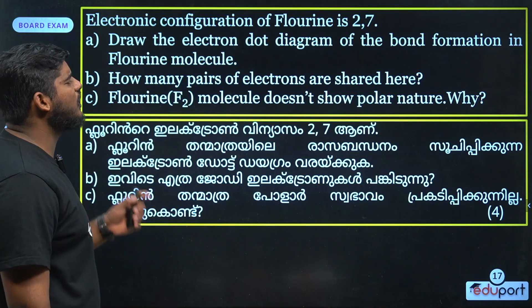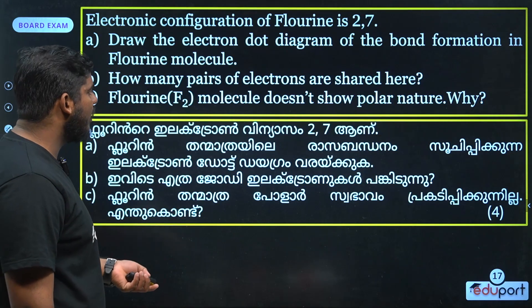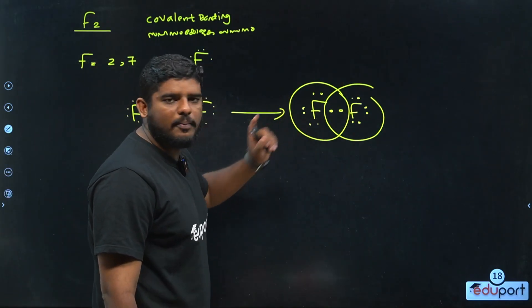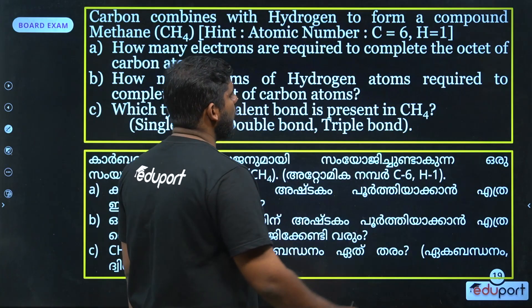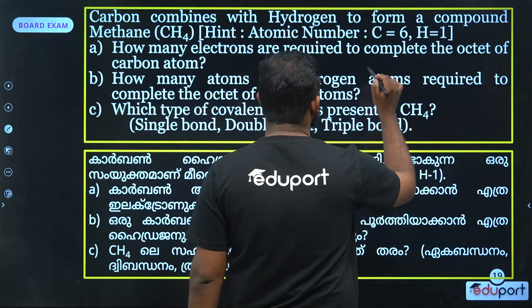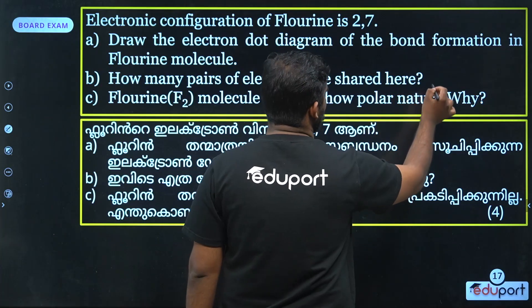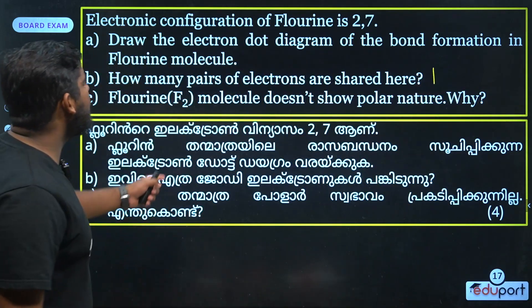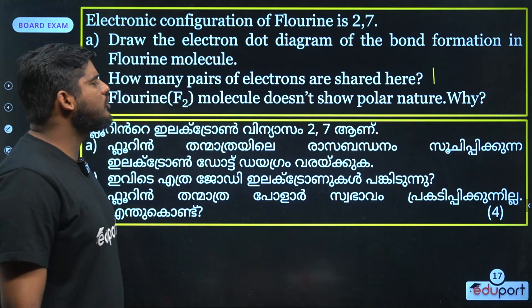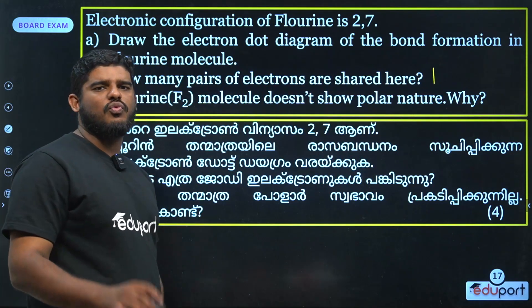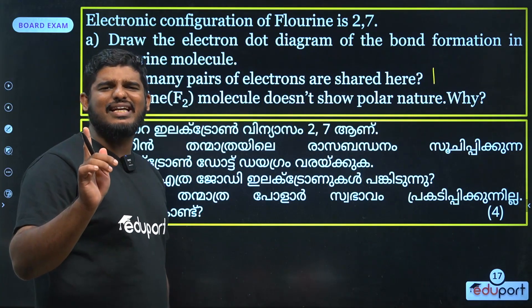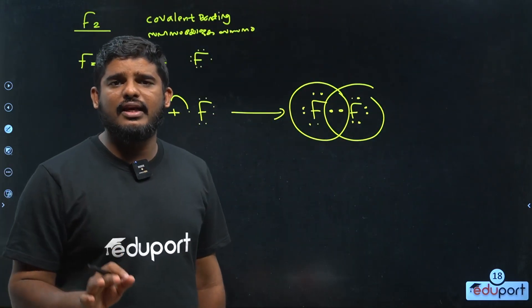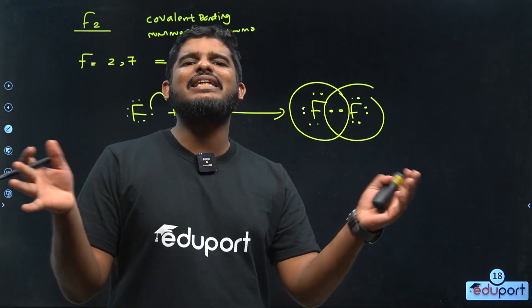How many pairs of electrons are made? There are 8 electrons, so one bonding pair. Then — fluorine molecule is said to show polar nature. What is polar nature? When we are in a molecule, we have to consider charge distribution.